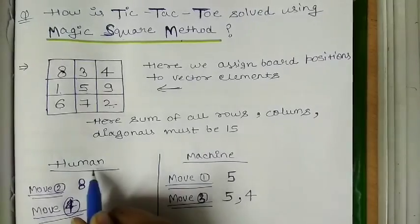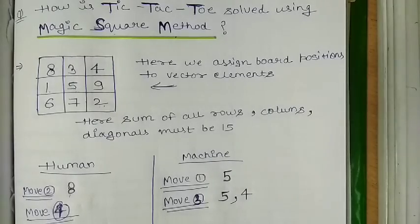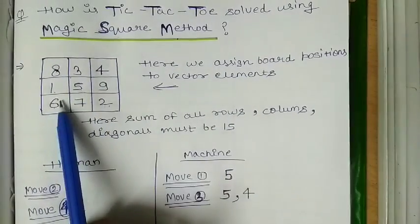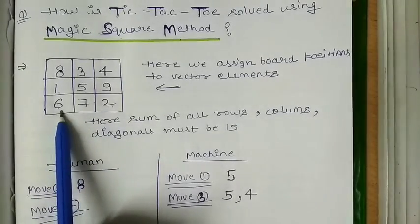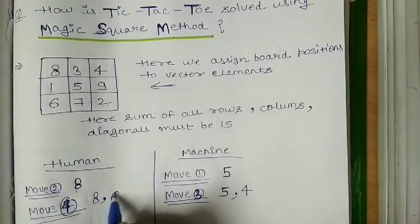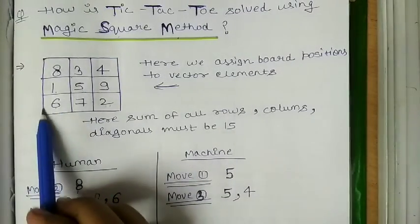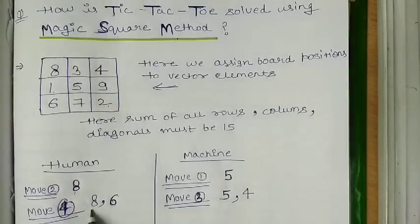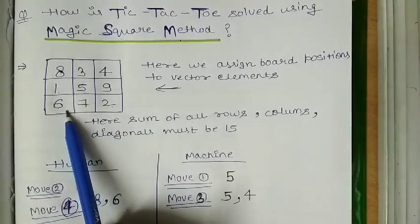The next move, Move 4, is again taken by human. Human will first check the chances of machine to win. He finds that 5 and 4 are already taken by machine, and if machine takes one more position it will win. So human uses his mind and blocks that — taking position 6. So in this move, human takes vector element 6, blocking the machine's chance to win.